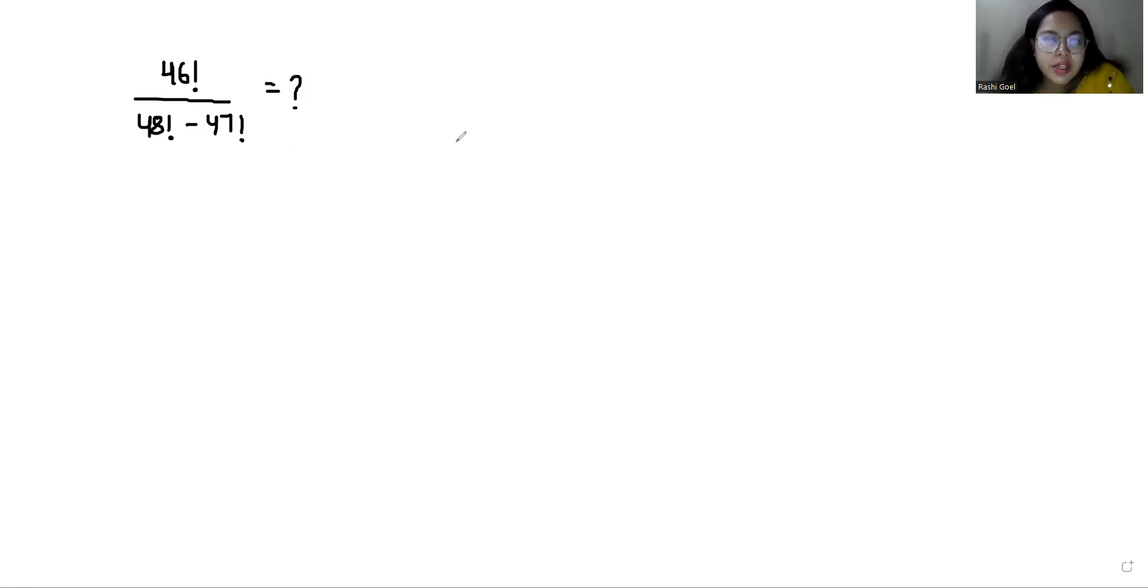So let's start with today's video solution. 46 factorial by 48 factorial, we can write it as 48 times 47 times 46 factorial minus 47 times 46 factorial.